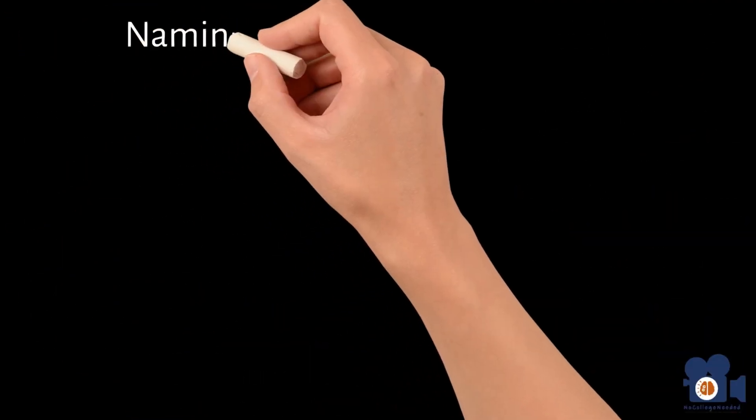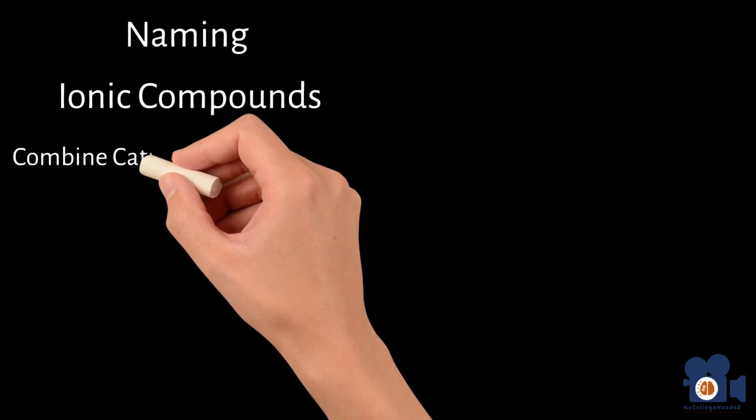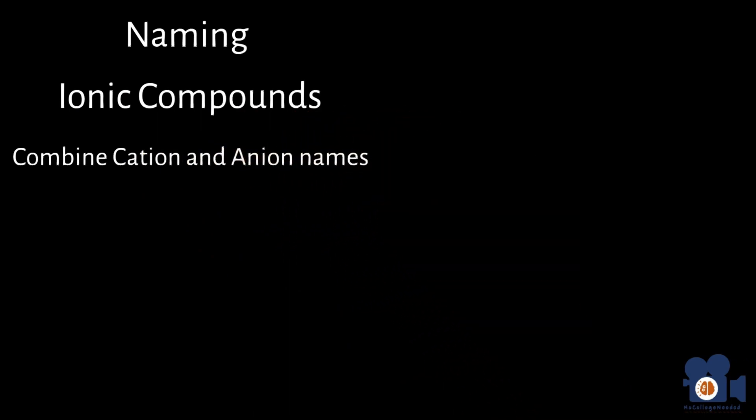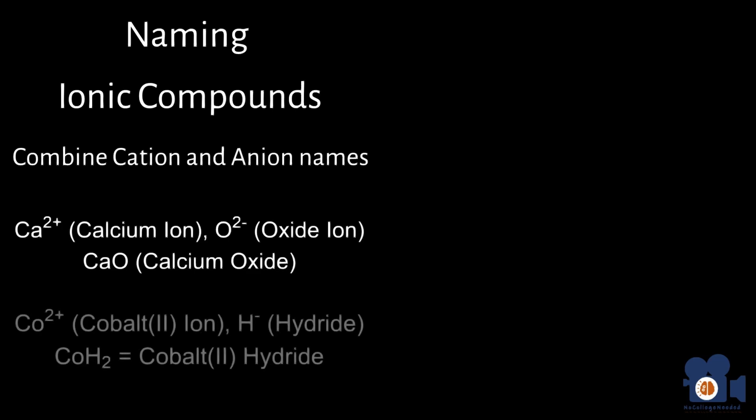Given the previous information, naming ionic compounds is probably the most straightforward by combining the cation and anion names. For example, combining the calcium cation Ca2+ with oxygen anion O2-, we get calcium oxide, or CaO. Another example is with cobalt-2 and hydride H-. Combining these, we get the name cobalt-2 hydride for the chemical formula CoH2. Remember, it's important that charges negate one another, and the net is zero.